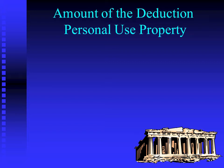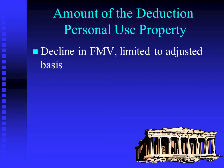For personal use property, you're looking for the decline in fair market value limited to the adjusted basis — the decline caused by the casualty. If you had your house appraised at two million dollars and it burns to the ground, your decline in fair market value would be two million, but if you only spent a hundred thousand for the house, you only get a hundred thousand. On the other hand, if the damage was only twenty-five thousand and your adjusted basis was a hundred thousand, you would just get the twenty-five thousand deduction.